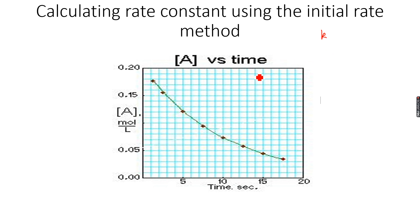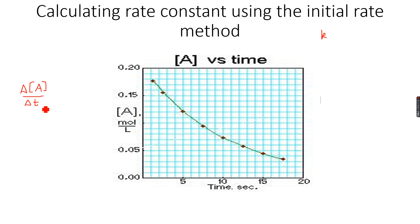The y-axis is the concentration of A and the x-axis is time. The gradient of this graph will be delta A over delta T, which is the gradient at any point. When we draw a tangent at any point and calculate delta A over delta T, that gives us the rate at that point, because rate is the change occurring per unit time.